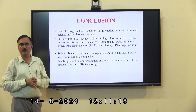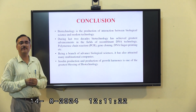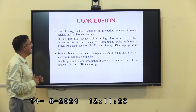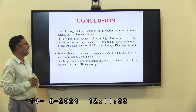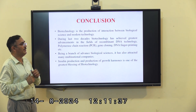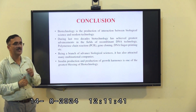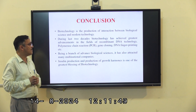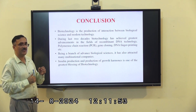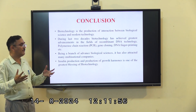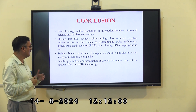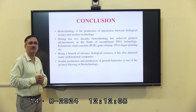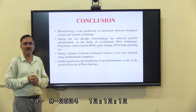In conclusion, today we discussed what is biotechnology. Biotechnology is the junction between biological science and modern technology. During the last two decades, biotechnology has achieved the greatest significance in the field, with key technologies including PCR, CRISPR-Cas9 genome editing technology, and recombinant DNA technology. Being a branch of advanced biological science, it has also affected many multinational companies, with insulin being a key product. These are the greatest blessings of biotechnology. We will continue in another lecture. Thank you.